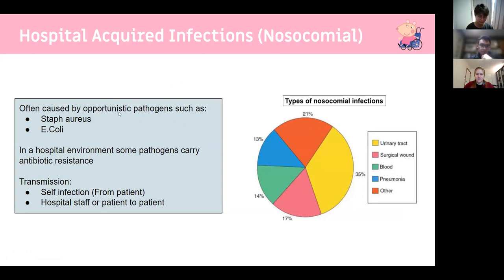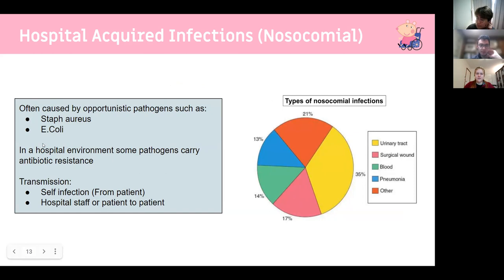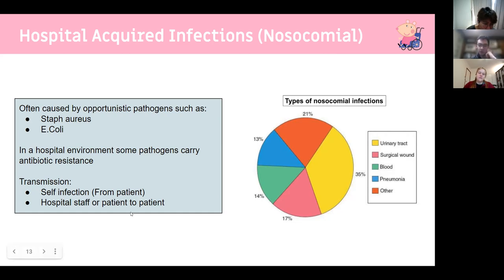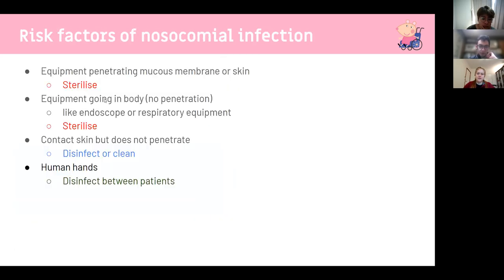Common hospital-acquired opportunistic infections include Staphylococcus and E. coli. The most common nosocomial infection is urinary tract infections, often through catheter placement. Pathogens in hospitals can carry antibiotic resistance through plasmid sharing via pili. Transmission can occur by wiping a catheter against a patient's skin picking up Staph aureus, or by not washing hands after seeing a pneumonia patient then touching an immunocompromised patient. Hand washing and the sterilization temperatures are the most high-yield points from this lecture.